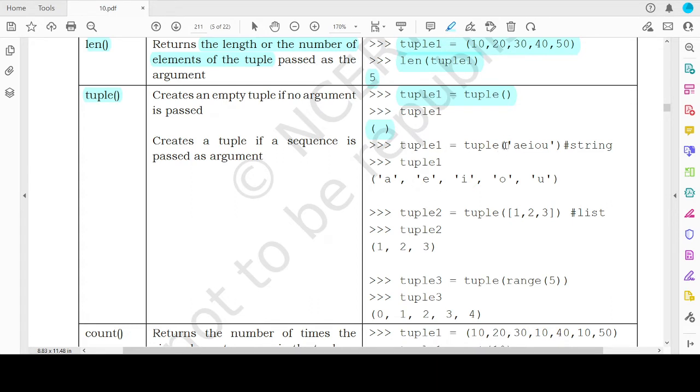Now if you want to initialize the values, the elements of the tuple as aeiou, then you pass the string aeiou and if you pass a sequence data type, then each and every element of that data type will become an independent element of the tuple when you pass it as an argument to the tuple function.